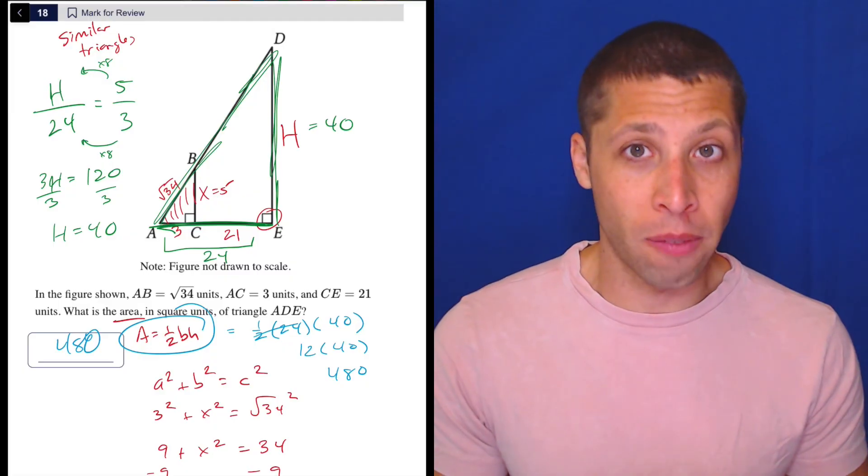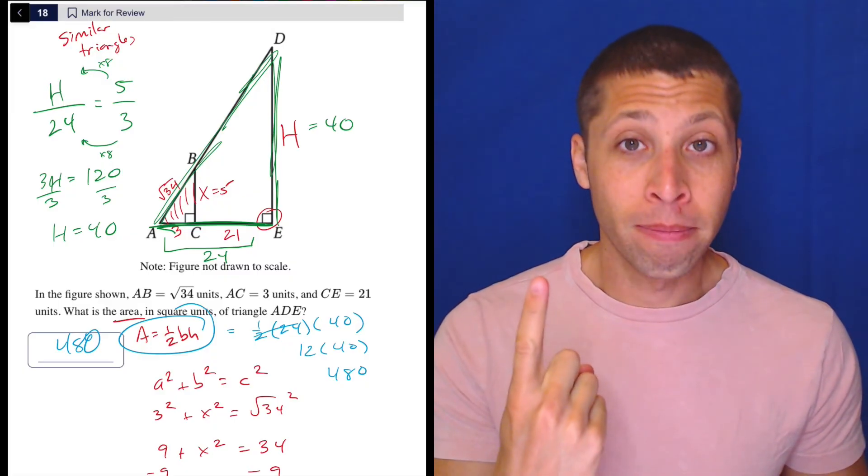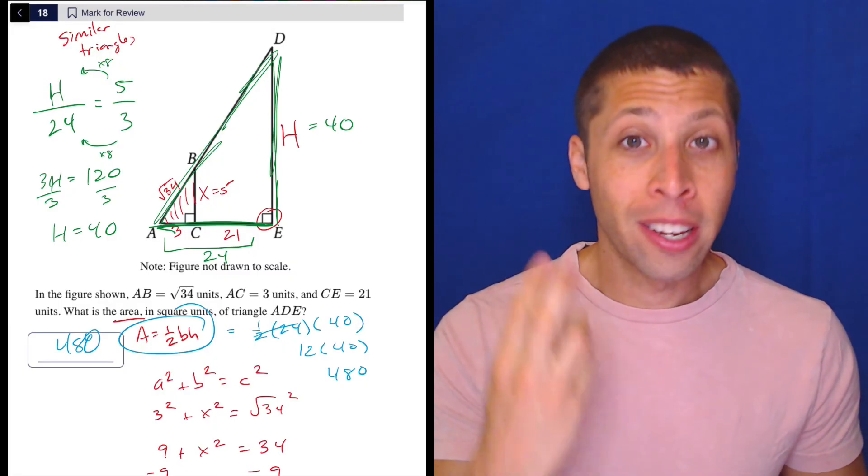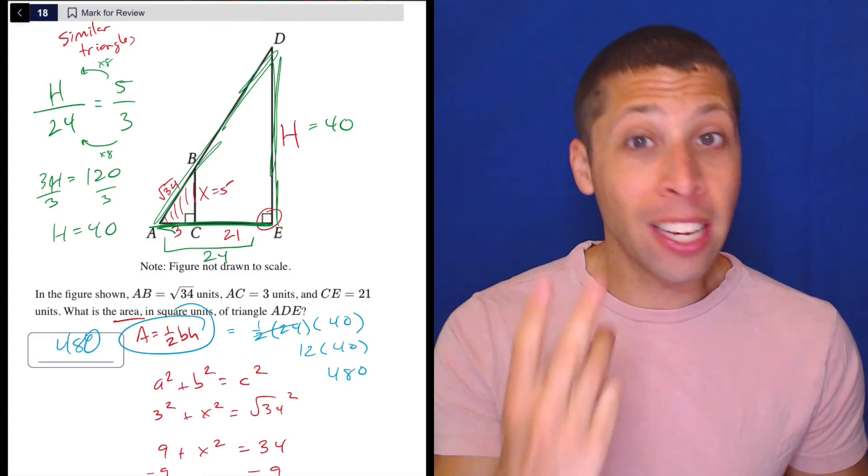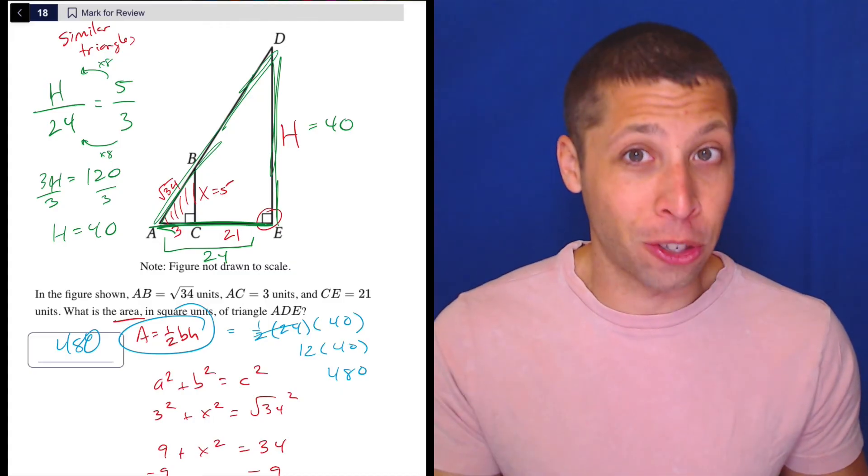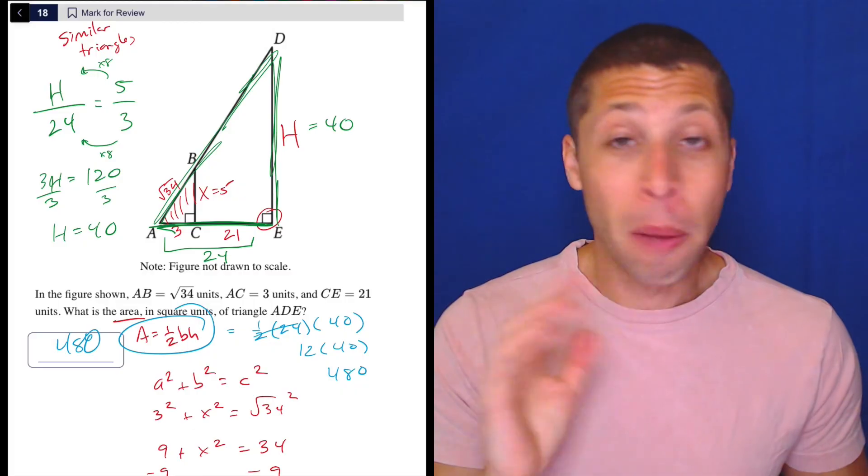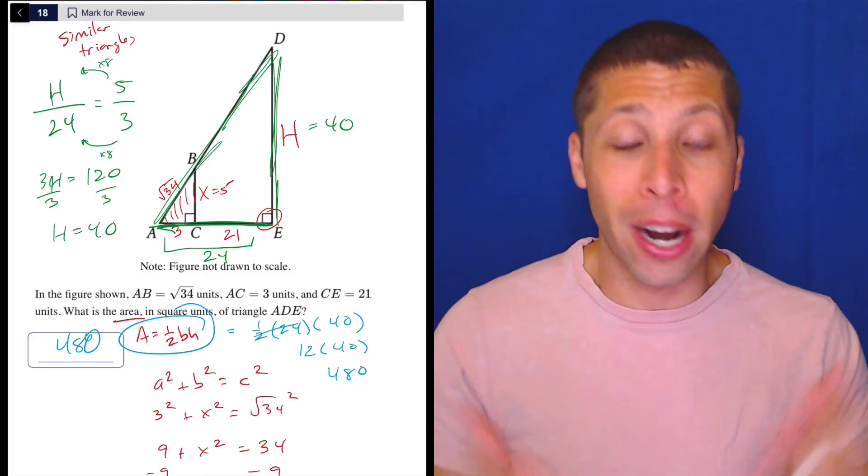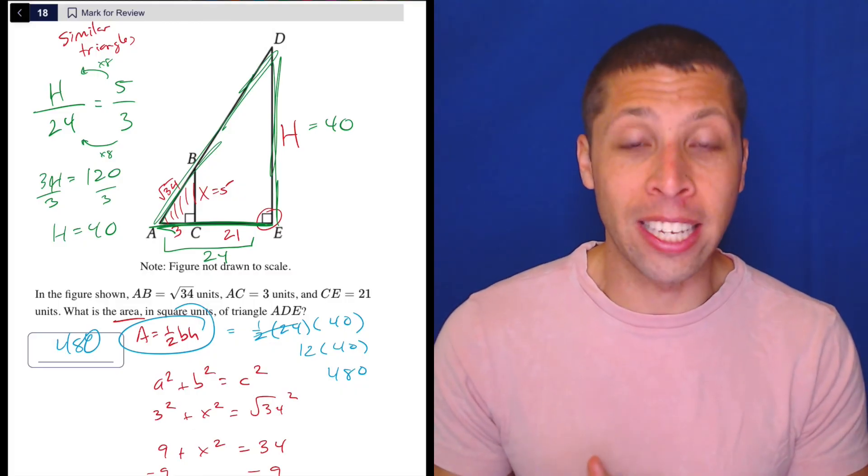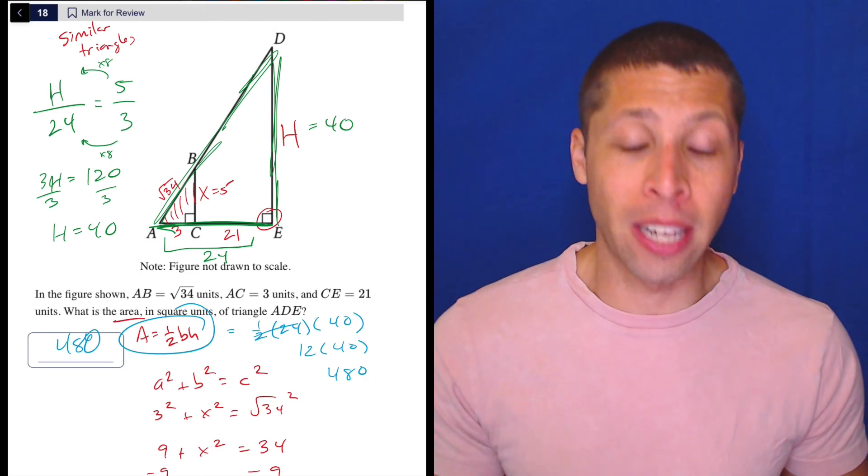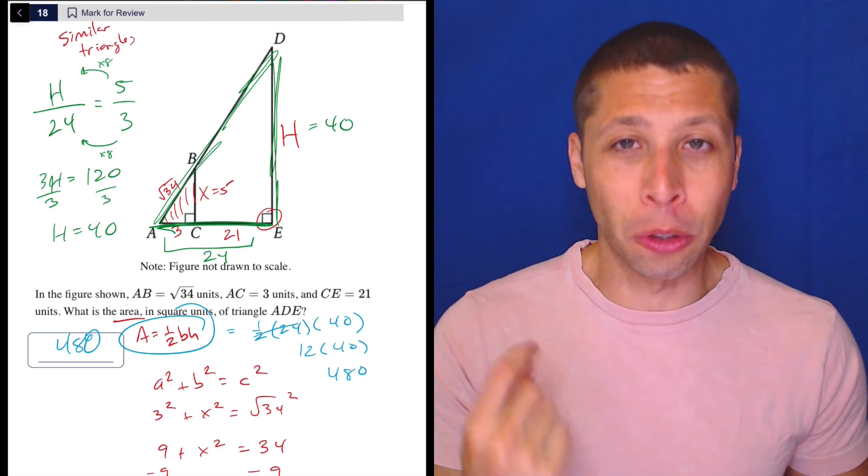What do we really need to use in order to solve this question? Pythagorean theorem, similar triangle proportions, area of a triangle. Three basic things. Two of them are given to us in the reference chart, right? Pythagorean theorem and the area of a triangle, both given to you. I didn't even use them because I have them memorized, but you could go to that reference chart and easily get those.